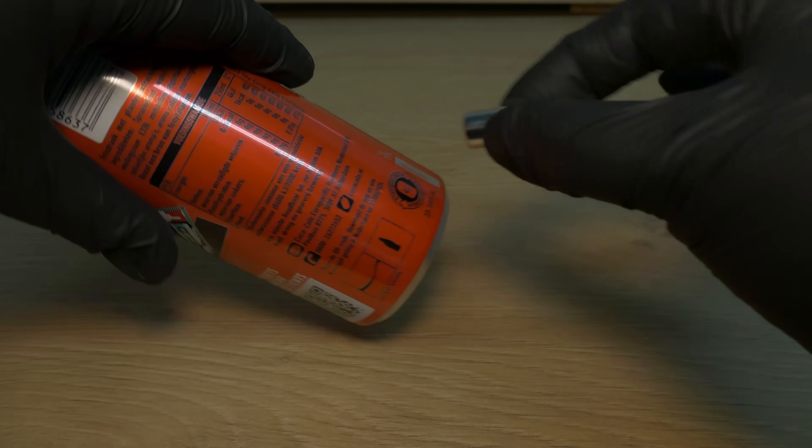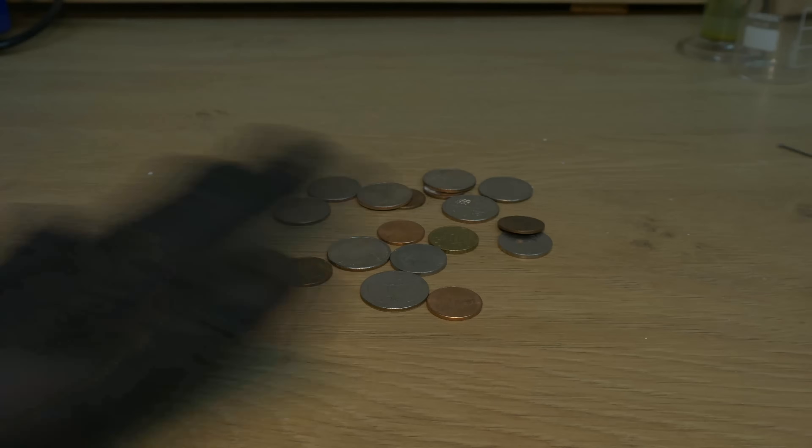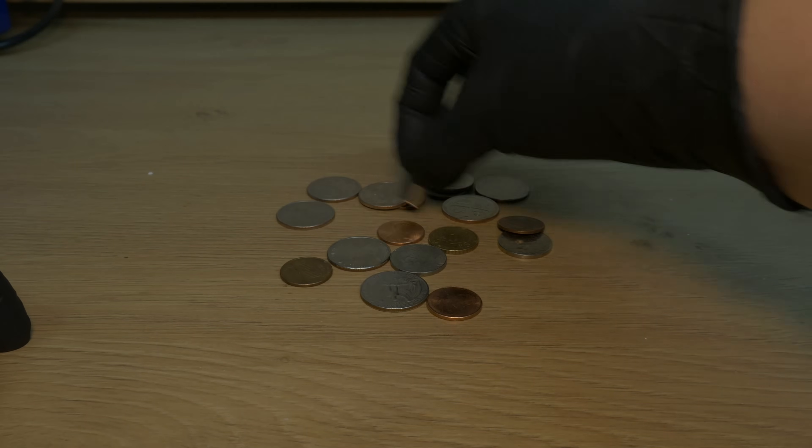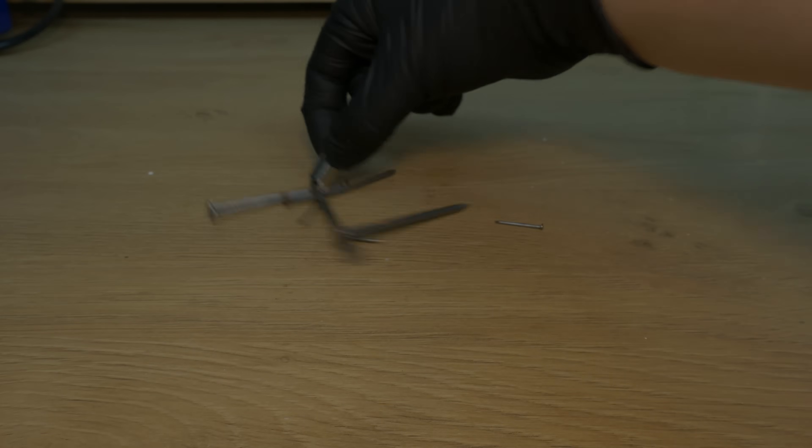Ever tried to stick a fridge magnet to something weird? Like an aluminum soda can or a handful of coins? You can push the magnet against them, but clunk, it just falls off.